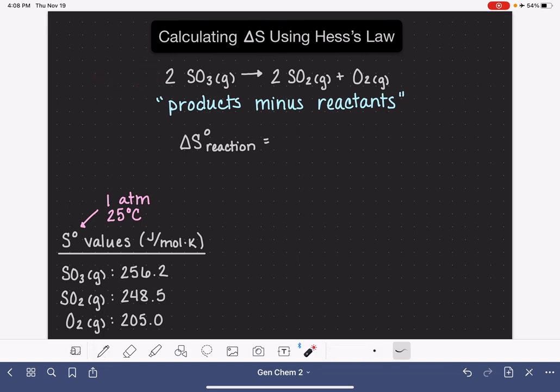So again, our calculation is going to be the entropy of all of the products, that's these guys over here, minus the entropy of the reactants, these guys right here. So let's start by setting up our products. We have our first product, SO2 gas, and we have two of them. So we're going to multiply two, the coefficient, times the standard entropy for SO2 gas, which is 248.5.